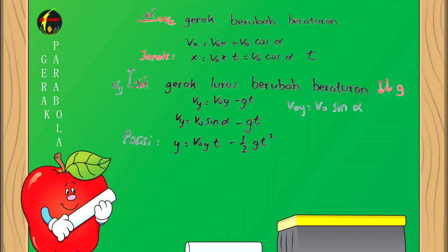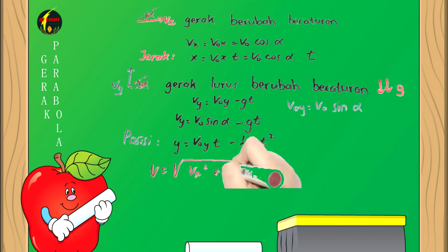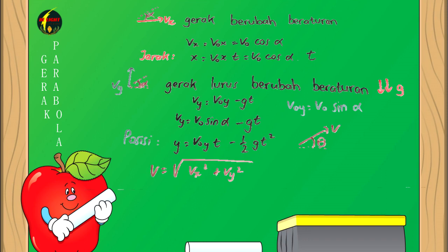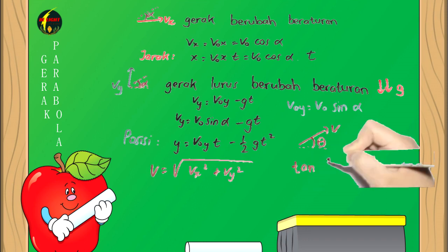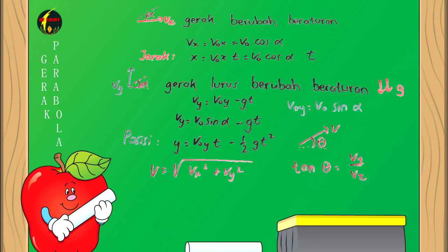Ketinggian memenuhi Y = V0Y × T - ½gT². Karena gerak parabola selalu memiliki komponen VX dan VY, maka kecepatan total V = √(VX² + VY²). Arah kecepatan benda memenuhi tan θ = VY/VX.